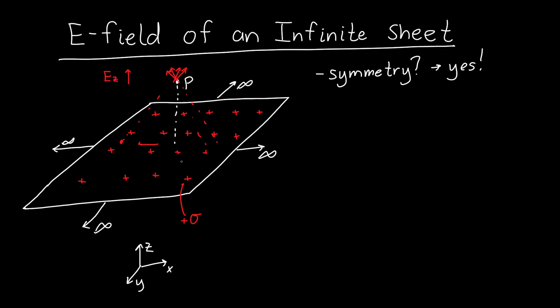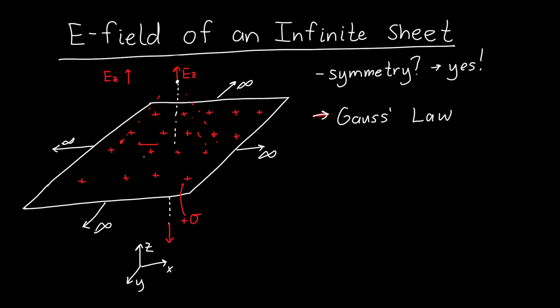Because the configuration is symmetric in x and symmetric in y, the x-components and y-components of the electric field cancel out, leaving only a z-component. On the top, the electric field is going to be pointing up. On the bottom, because we have charge above, the electric field points away from that charge — so it points down when we're below the sheet. Because this has infinite symmetry, we can use Gauss's Law to solve this problem, giving us nice and simple integrals.